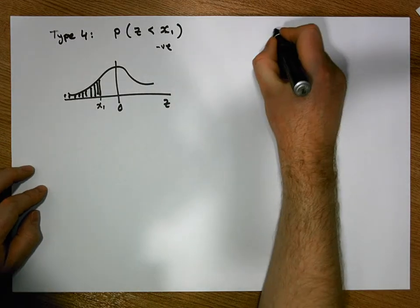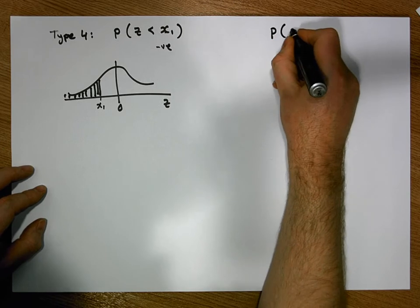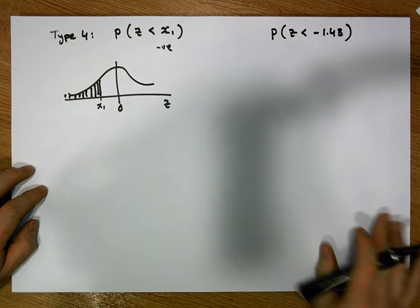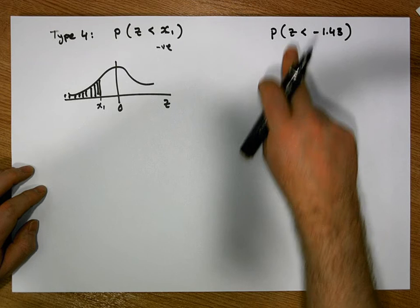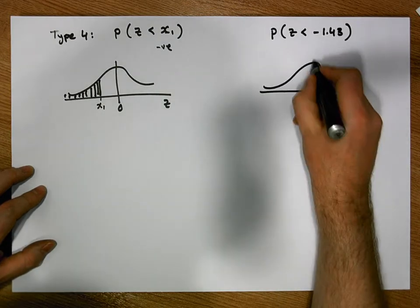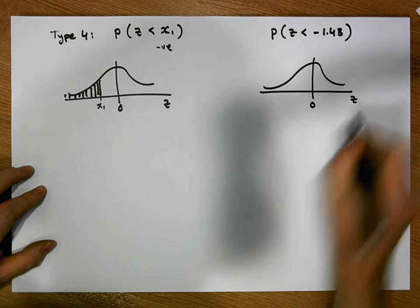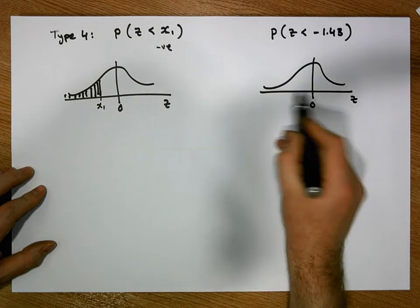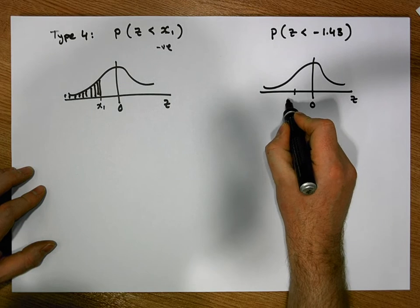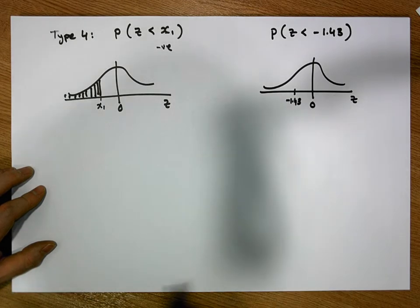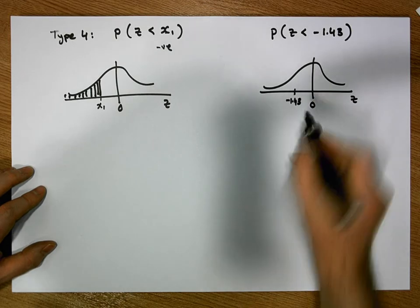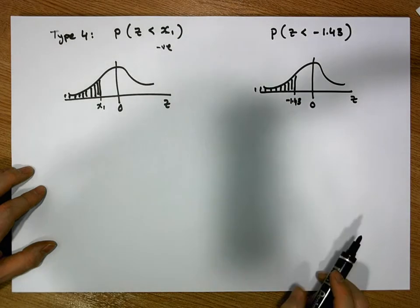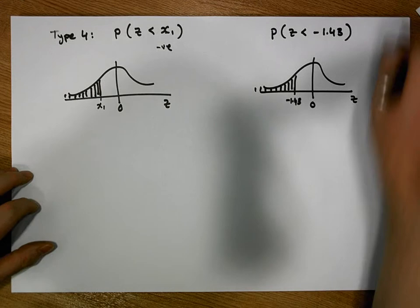Let's have a look at a specific example. Let's say we're interested in the probability of observing a z-score less than minus 1.43. The first thing we'll always do is draw our standard normal curve for the z variable, centered on 0. Our bound here is minus 1.43, which is to the left-hand side of 0. I'm interested in the probability of any z-score on this side — the left-hand tail area with respect to minus 1.43.